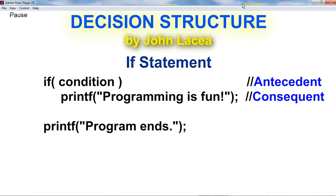Decision structure is a group of statements that provide ability for the computer to make decisions. Decision structure is also called selection structure.